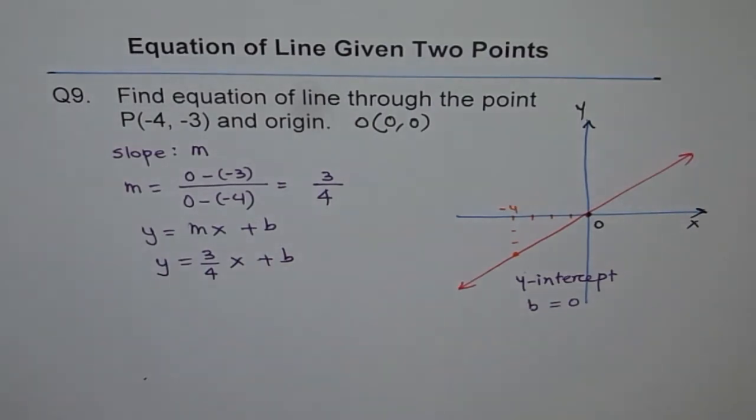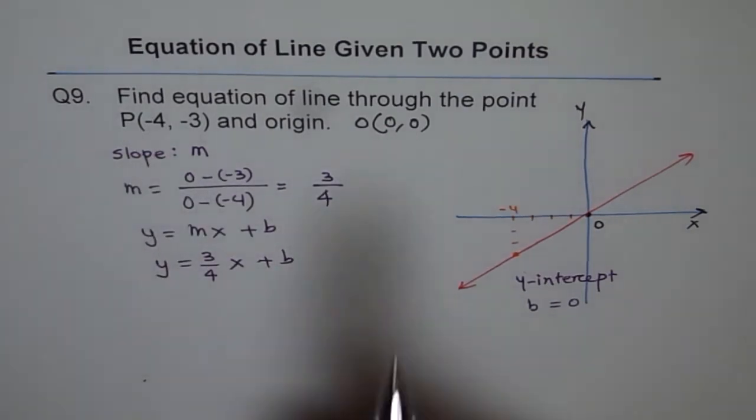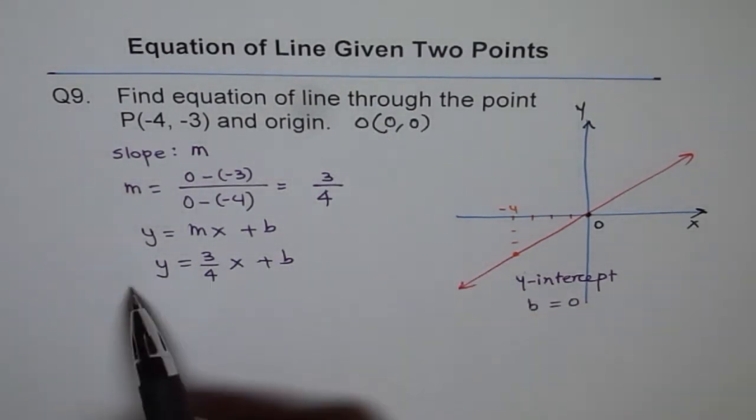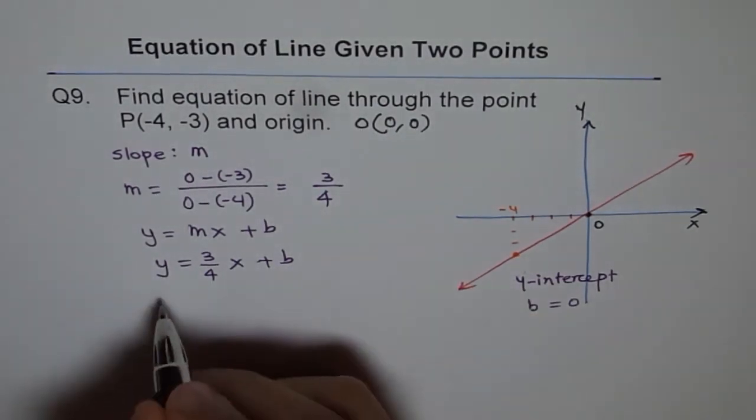To find B, well, let's try to find. We know it is 0, but let's verify. How do we do so? We can select one of these points. Good point to select is (0, 0), of course. So we will put 0 for X and 0 for Y and check what B is.